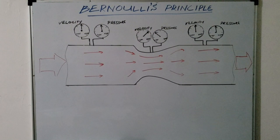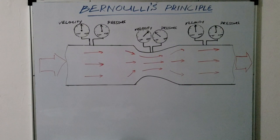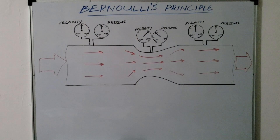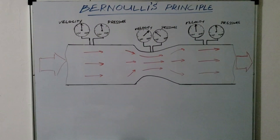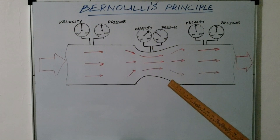As the air enters the tube, it is traveling at a known velocity and pressure. When the airflow enters the narrow portion, the velocity increases and the pressure decreases. Then, as the airflow continues through the tube to the wider portion, both the velocity and pressure return to their original values.